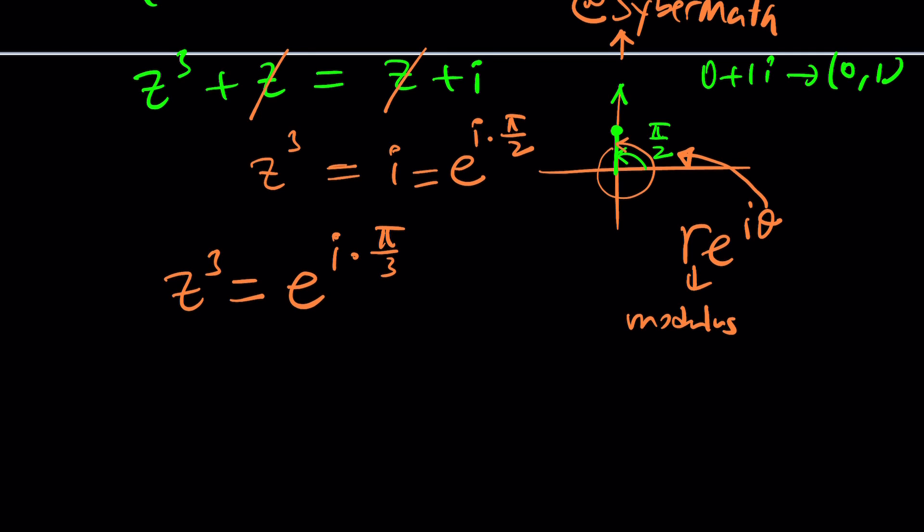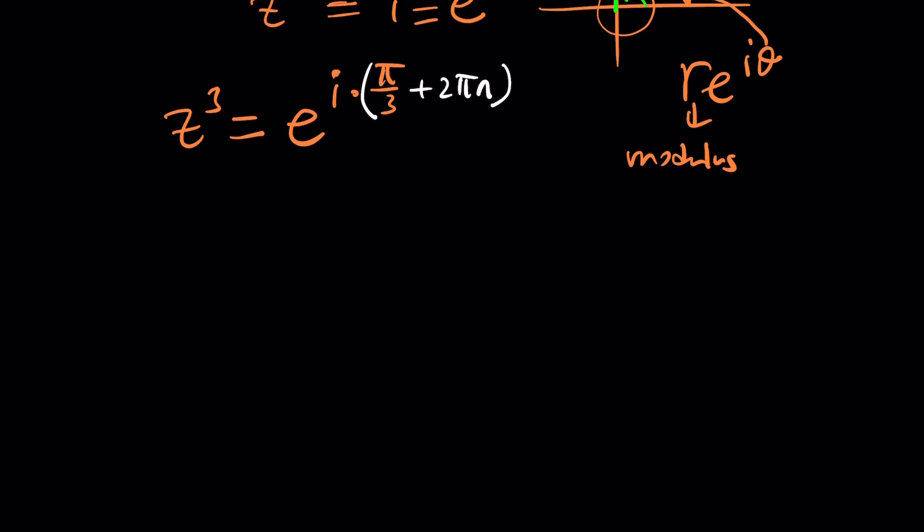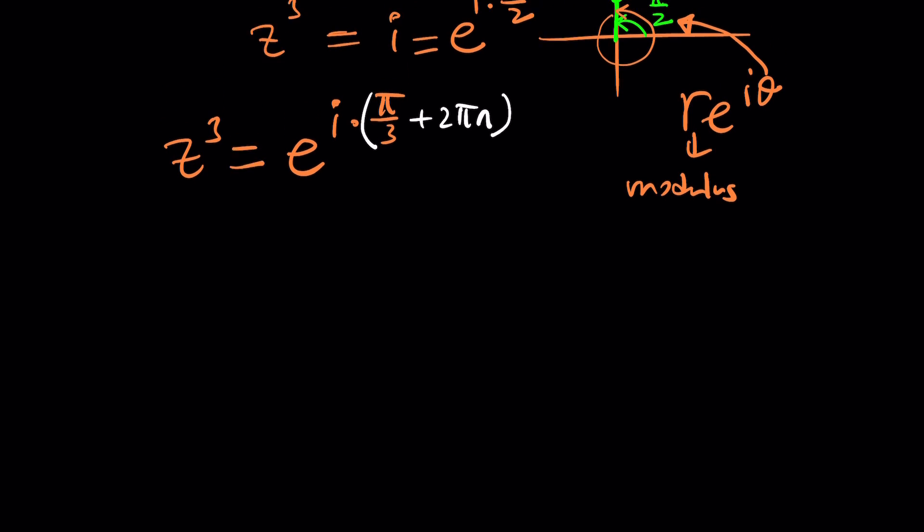A complex number has three cube roots. Why? Because you can come up with three angles when you triple them they're gonna have the same value pretty much. So how do we account for that? We can actually add multiples of two pi to this and that'll basically take care of the rest.